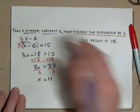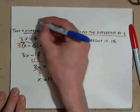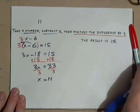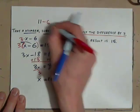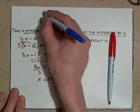So, if we check the answer, we're going to take a number, 11, subtract 6. So, we're checking if 11 works. Subtract 6. What does that give us? 5, right?